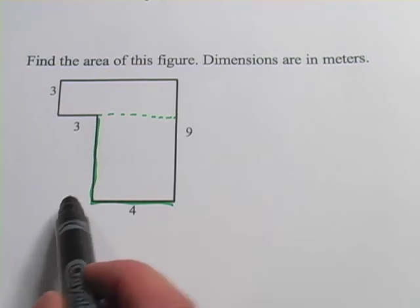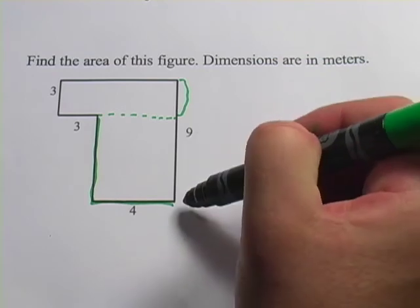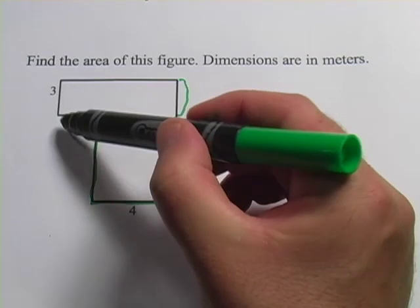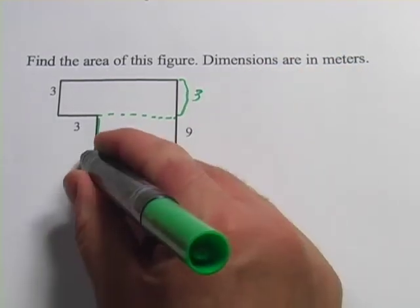To get this side, all I have to do is subtract this amount from 9. This side here is the same as this side over here, it's 3, so this length here must be 6.